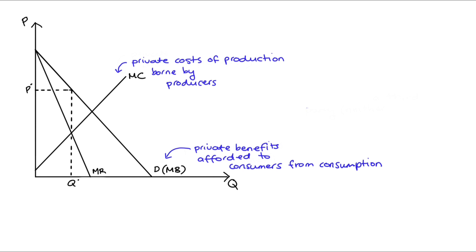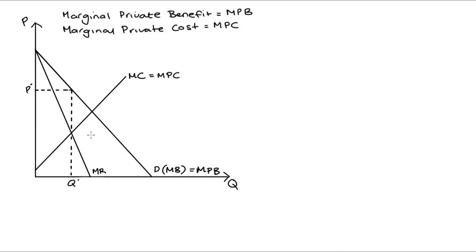An external cost or benefit — so an externality — in contrast to a private cost or benefit, is incurred to a third party, so neither the producer nor consumer, and that can be the result of either the production or the consumption of a good. Just to make it clear that these curves only track the private costs and private benefits, I'm going to add in on the diagram that marginal benefit MB is MPB — marginal private benefit — and marginal cost is marginal private cost MPC.